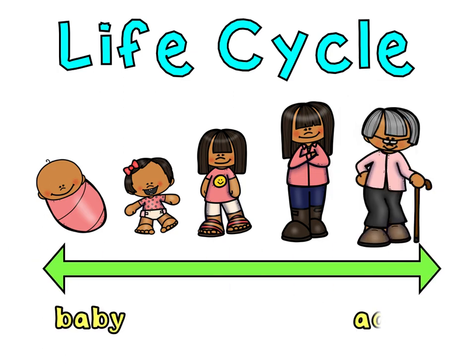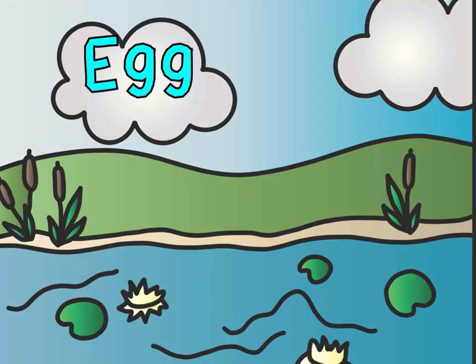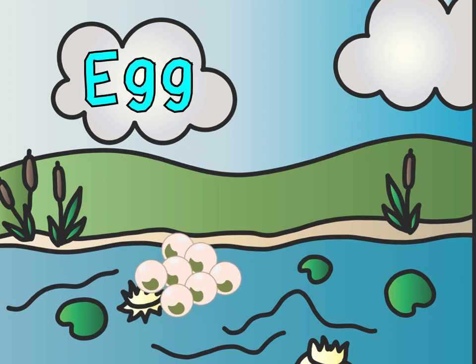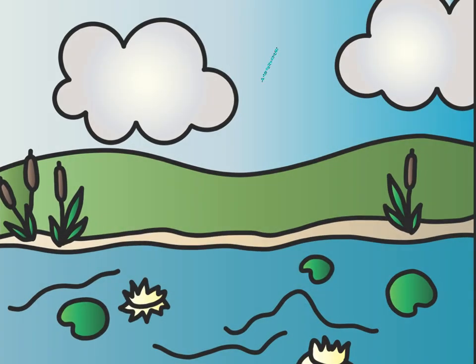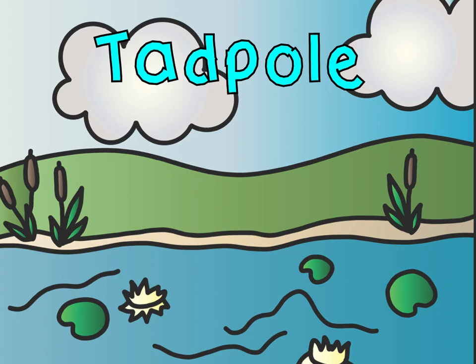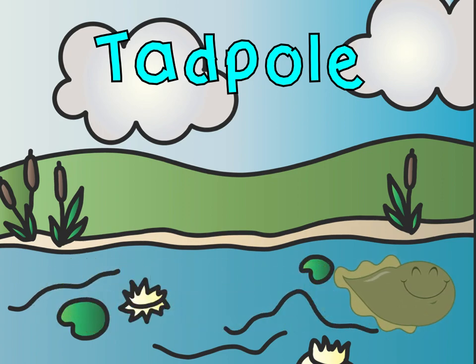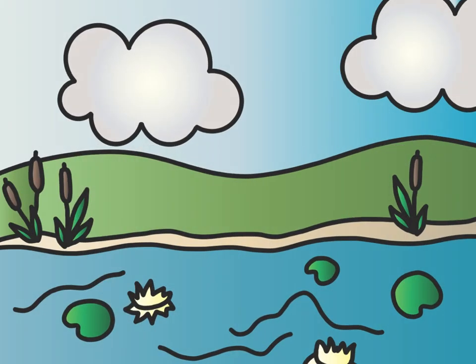The life cycle of a frog begins when an adult lays an egg. The eggs are laid in the pond and grow from one to three weeks. Afterwards, the eggs hatch and the tadpole emerges. It lives in the water and uses gills to breathe, and does not have any legs.